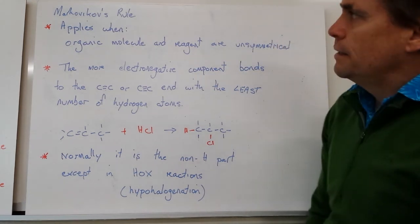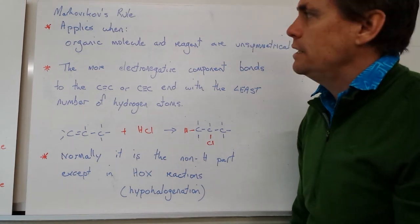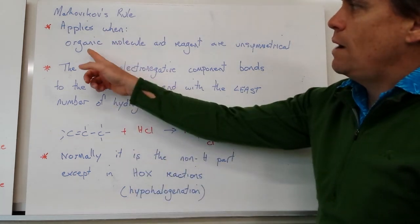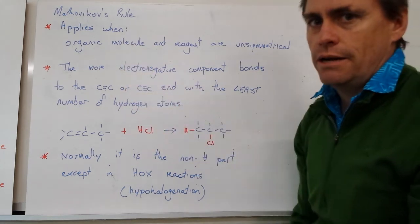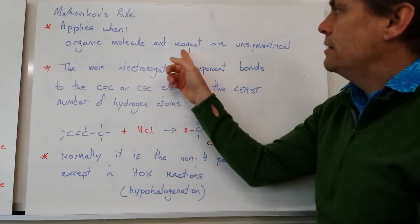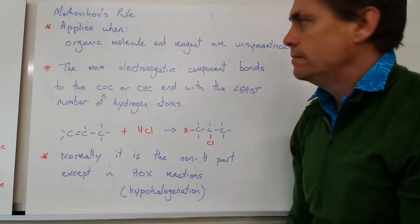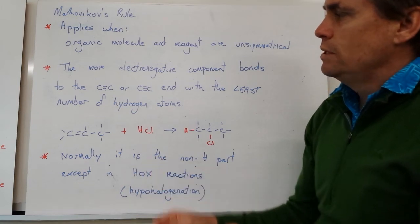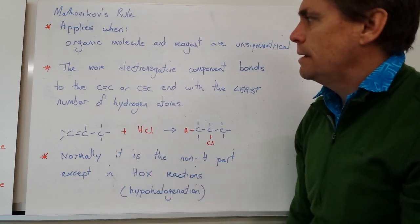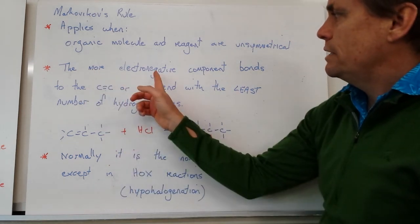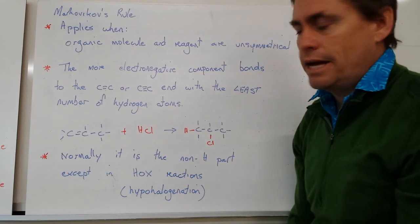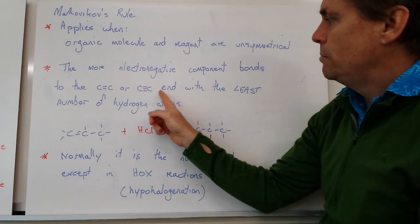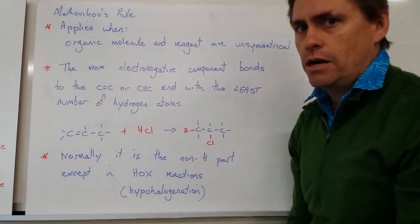Based on evidence, Markovnikov came up with a rule for predicting compounds in that third scenario. It applies when our organic molecule — the alkene or possibly the alkyne — and the reagent are both unsymmetrical. The rule states that the more electronegative component of the reagent will bond to the carbon-carbon double bond or triple bond end with the least number of hydrogen atoms.